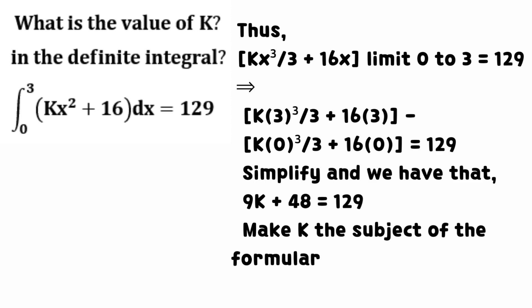Simplify and we have that the sum of 9 times k and 48 equals 129. Make k the subject of the formula.